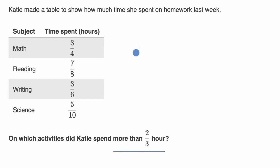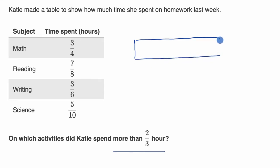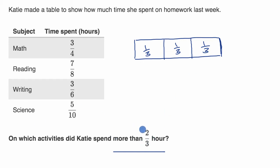First, let's think about representing two-thirds. If this is a whole, I could split it into three equal sections. So that would be a third, that would be a third, and then that would be a third. And two-thirds would be two of them — one-third and then two-thirds.